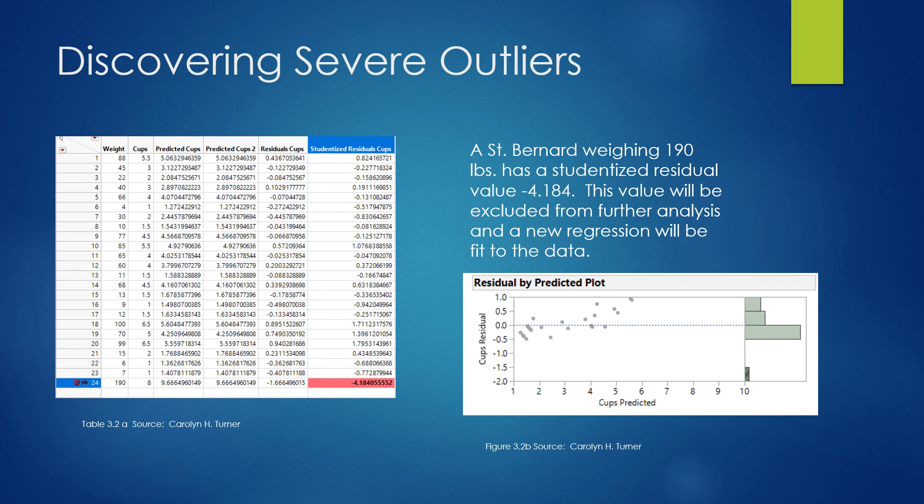Then we have predicted cups, too, because in the first run I discovered a severe outlier. How did I do that? We calculate the residuals. So when we take the observed cups of food, 5.5 for an 88-pound dog, minus the predicted cups of 5.06, we get the residual amount here. Then we put that on a standardized scale called a studentized residual. If a studentized residual has a value that is over the absolute value of 3, it is considered a severe outlier. So the only dog in the study that had a studentized residual greater than 3 was our 24th dog, who happened to be a St. Bernard weighing 190 pounds.